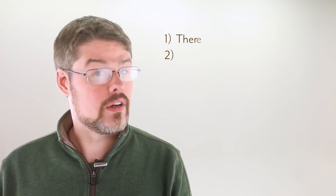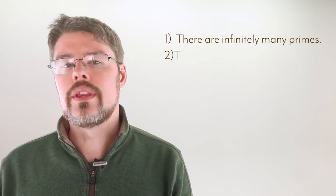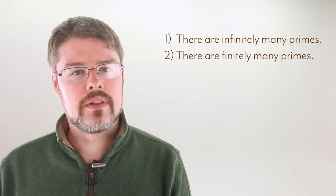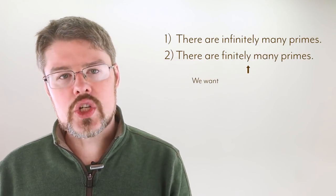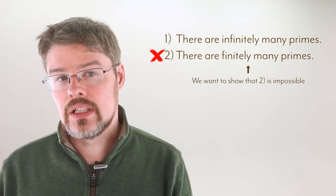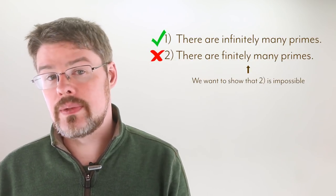To begin the proof, we observe that this can really only go one of two ways. Either there are infinitely many primes, or there are a finite number of primes. That is, there's a certain number of them, and no more. If we can show that the second option is impossible, then we know the first one must be true.